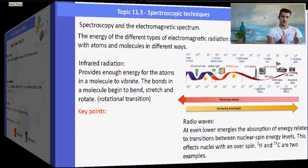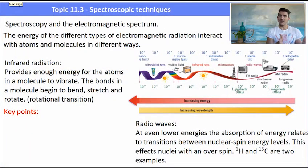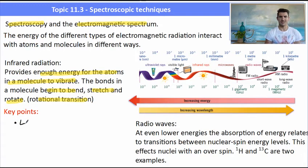Any spectroscopy technique uses some part of the electromagnetic spectrum to interact with the atoms, the molecules, or the ions. Different parts of the spectrum interact in different ways. IR radiation is enough to start to vibrate the bonds between the atoms, so they start to bend, stretch, and rotate, which are called rotational transitions. But those bonds absorb the energy.